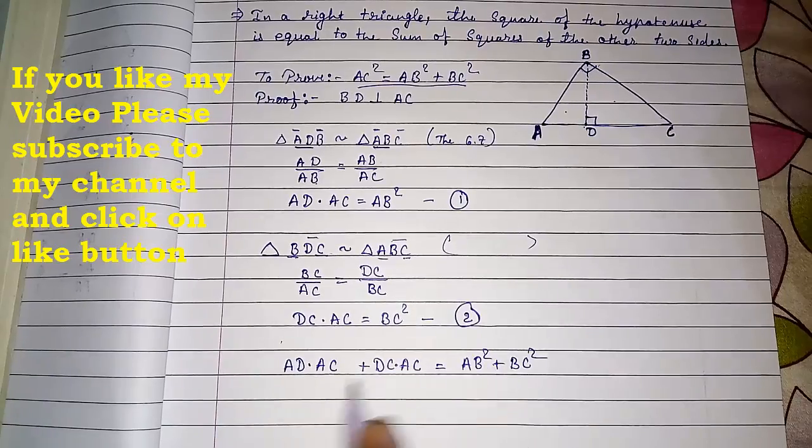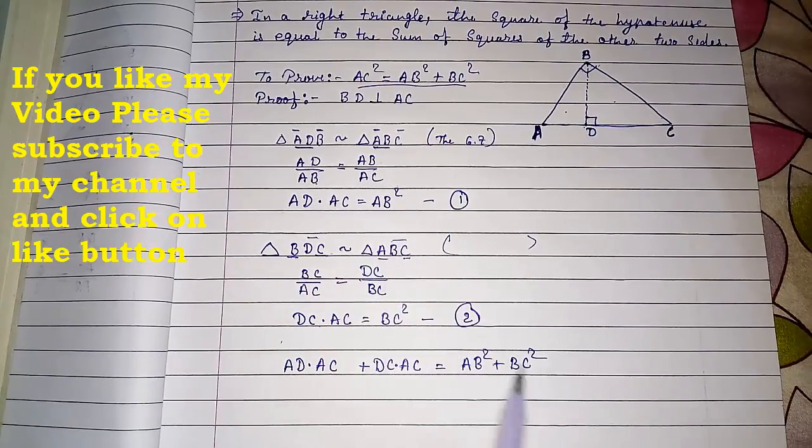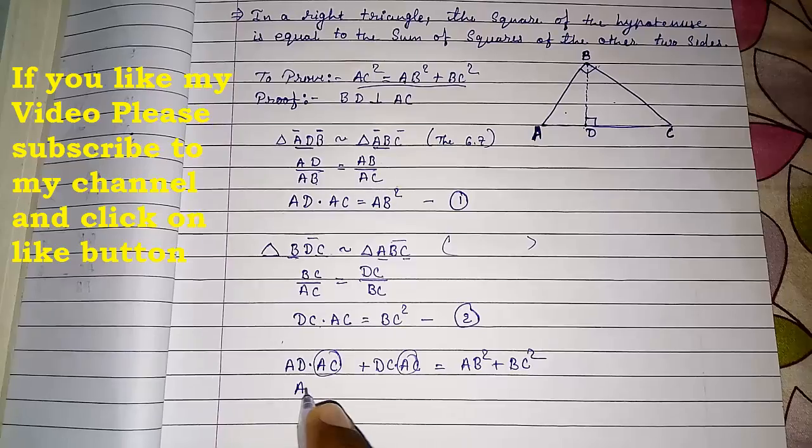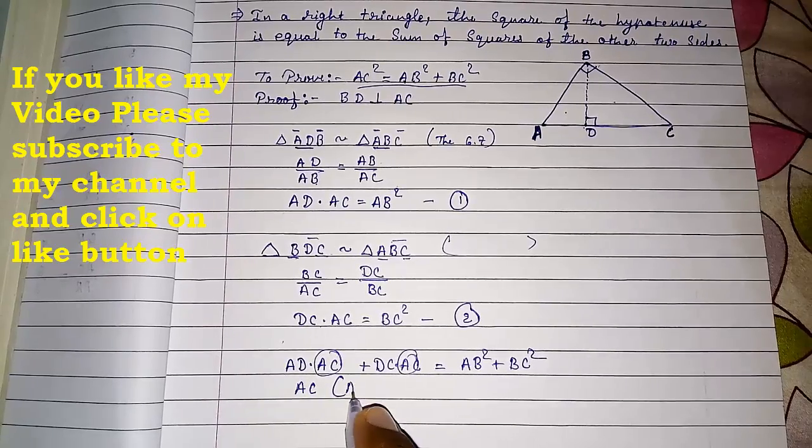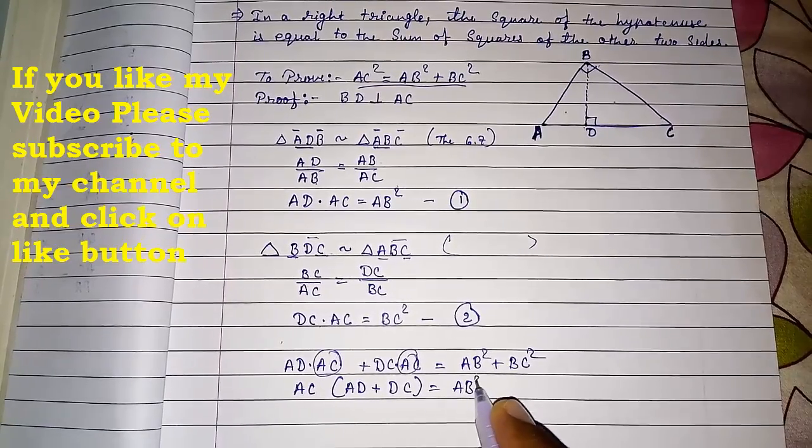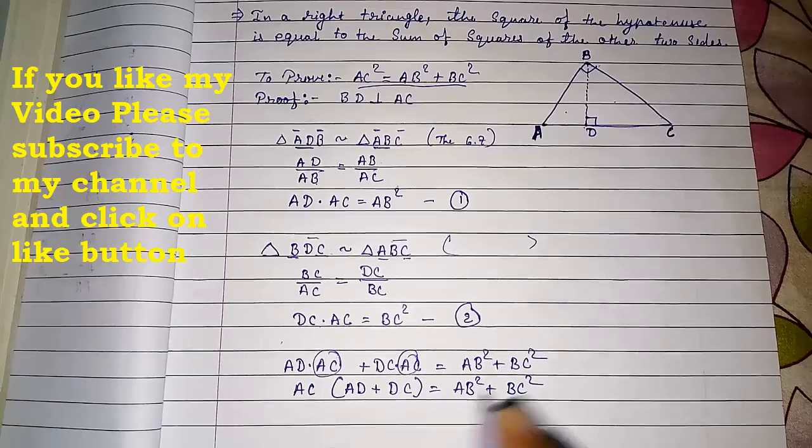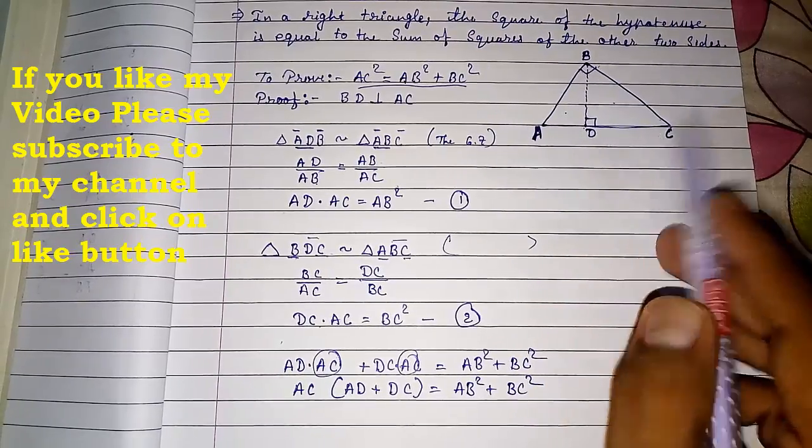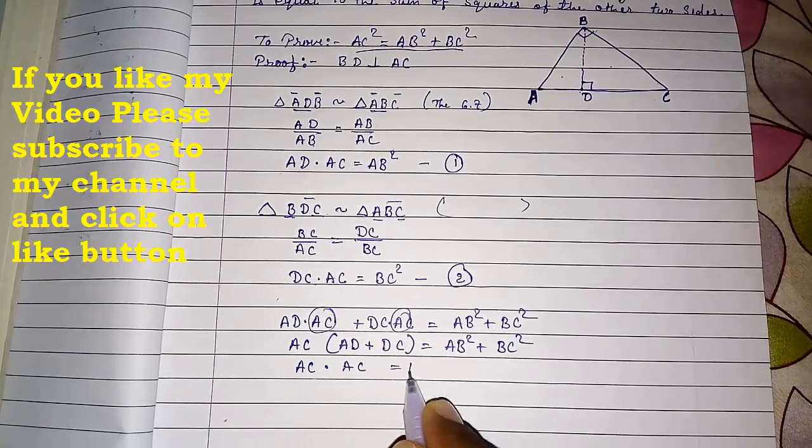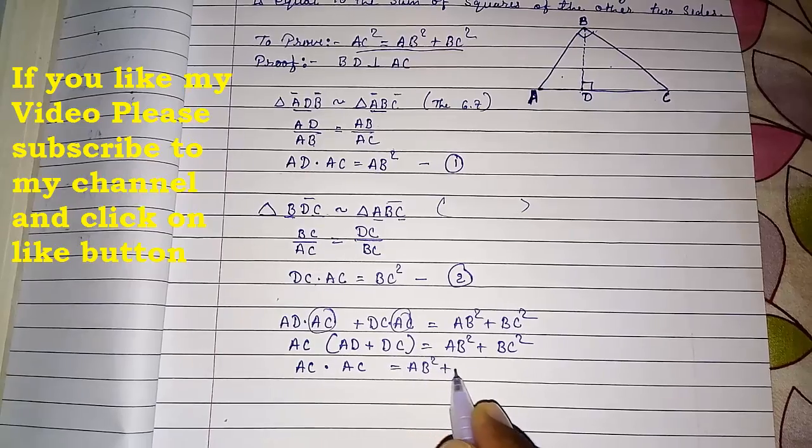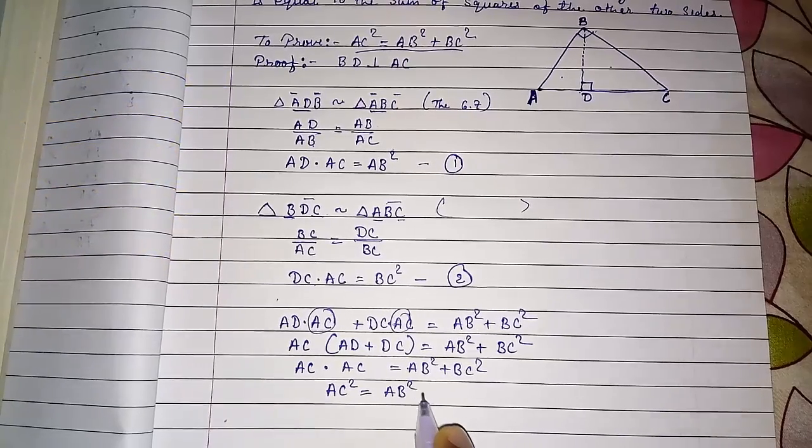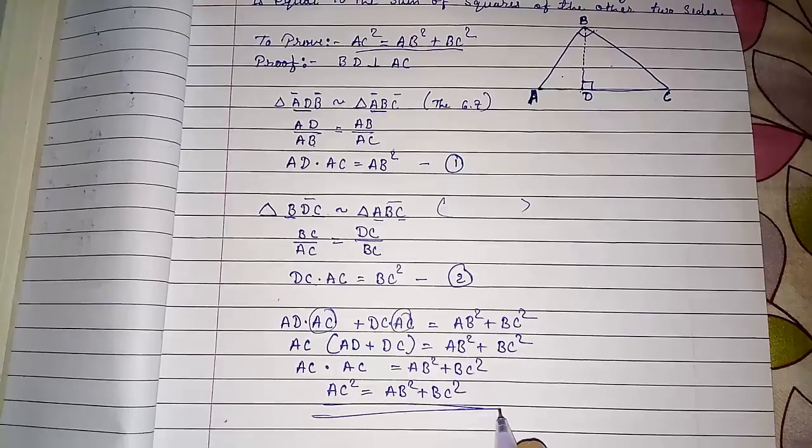Adding result one and two - look here, these two and these two. Now AC you can see in these two, so take out AC common. Remaining is AD plus DC, and here AB square plus BC square. Now easily we can see AD plus DC is AC. Again, AC into AC is equal to AB square plus BC square. So AC into AC, AC square, is equal to AB square plus BC square. Hence proved.